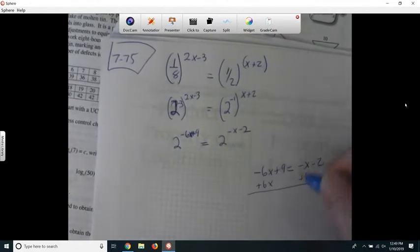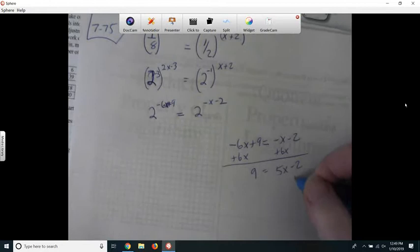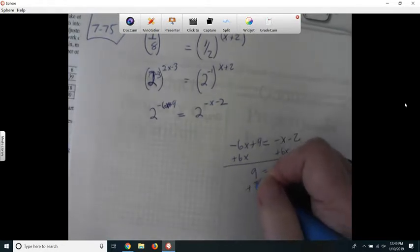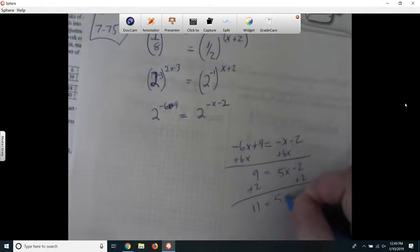And then I would have 9 equals 5x minus 2. And then I could add 2 to both sides. And I got 11 equals 5x.